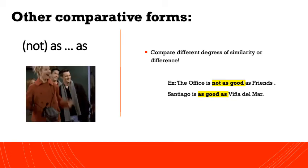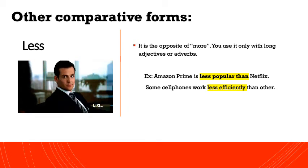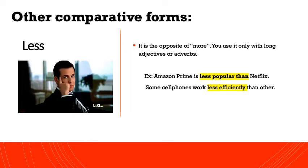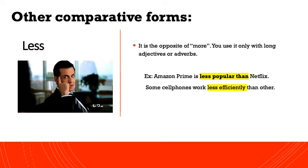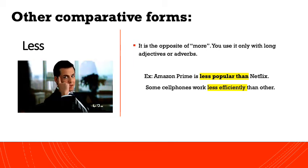Another comparative form is 'less.' We use 'less' as the opposite of 'more,' and you use it only with long adjectives or adverbs. For example, 'Amazon Prime is less popular than Netflix.' The second example says 'some cell phones work less efficiently than others' — here we're using an adverb because we are describing the way cell phones work, and some of them work less efficiently than others.